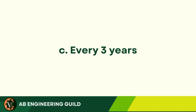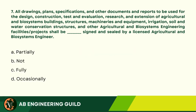Answer: C. Every 3 years. Question 7: All drawings, plans, specifications, and other documents and reports to be used for the design, construction, test and evaluation, research, and extension of Agricultural and Biosystems buildings, structures, machineries and equipment, irrigation, soil, and water conservation structures, and other Agricultural and Biosystems Engineering Facilities/Projects shall be _______ signed and sealed by a licensed Agricultural and Biosystems Engineer. A. Partially. B. Not. C. Fully. D. Occasionally.